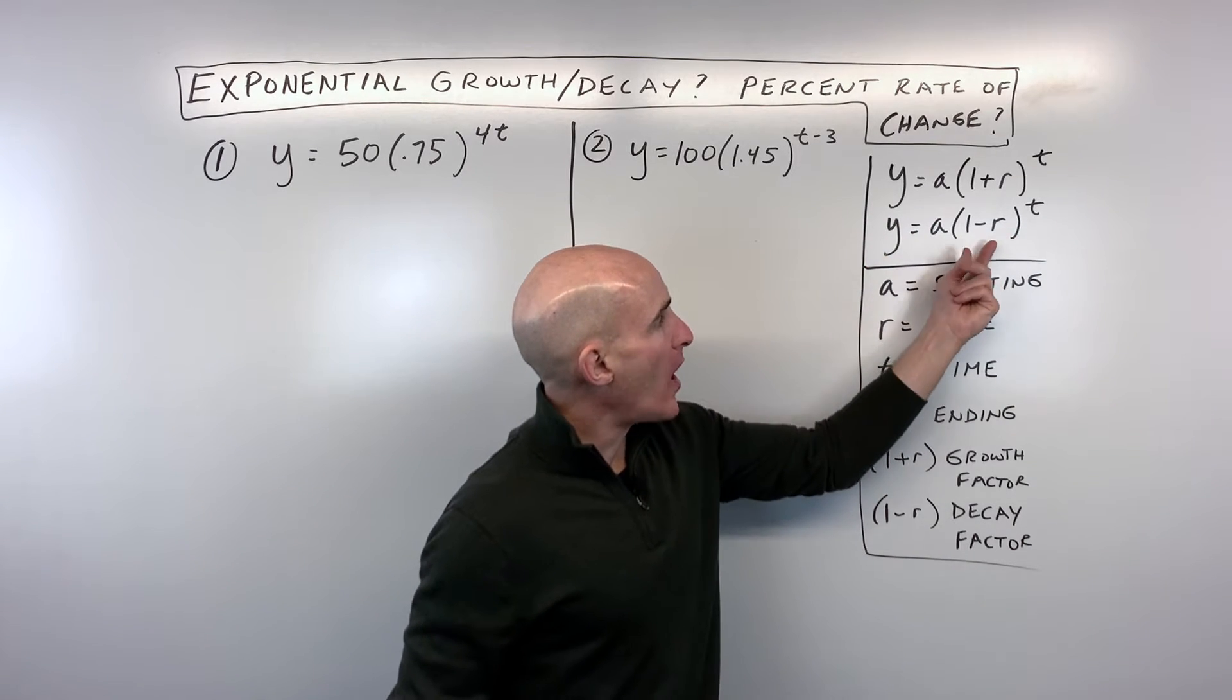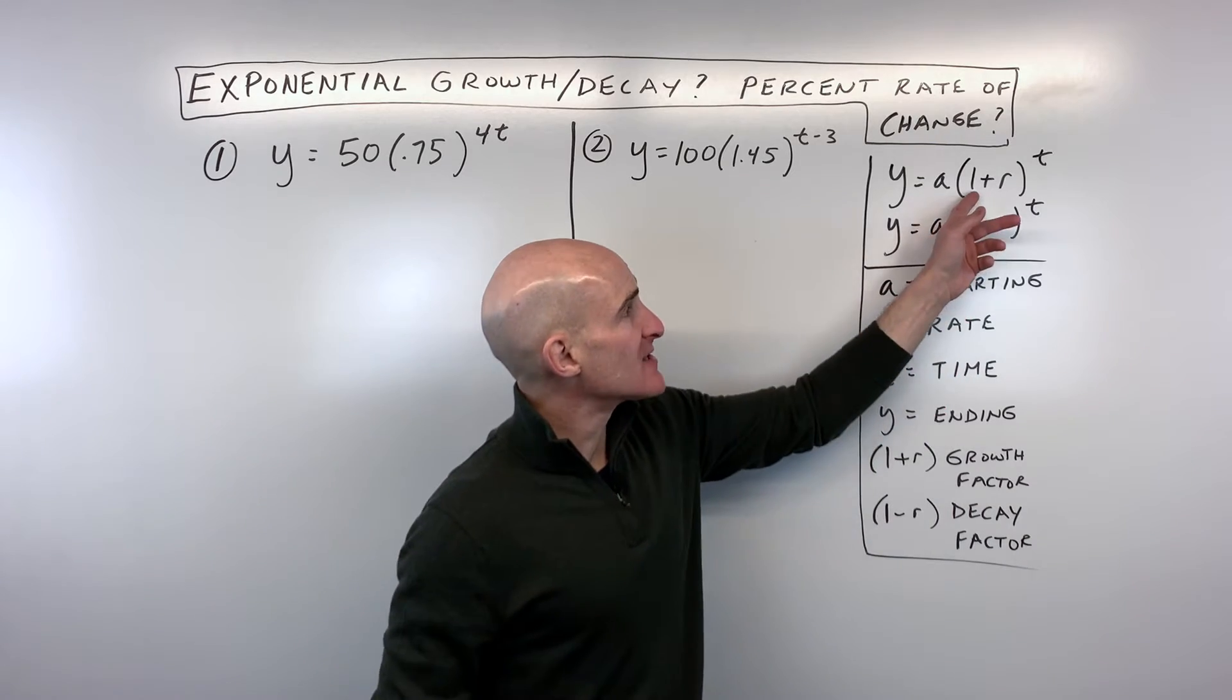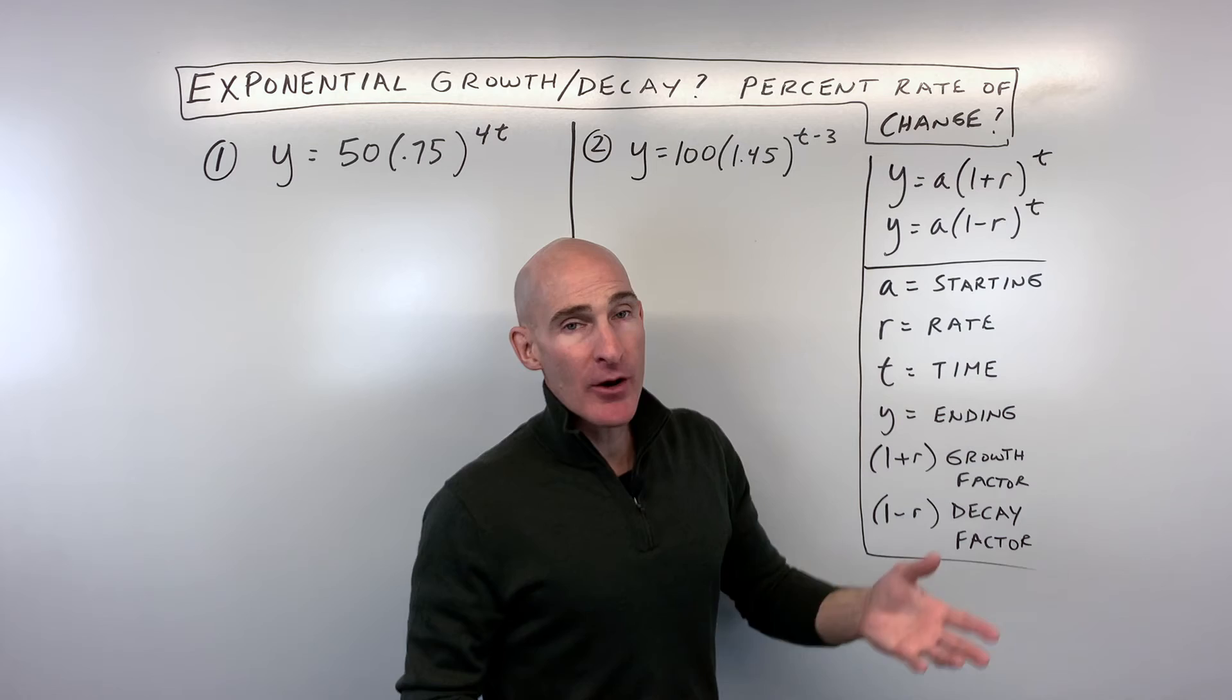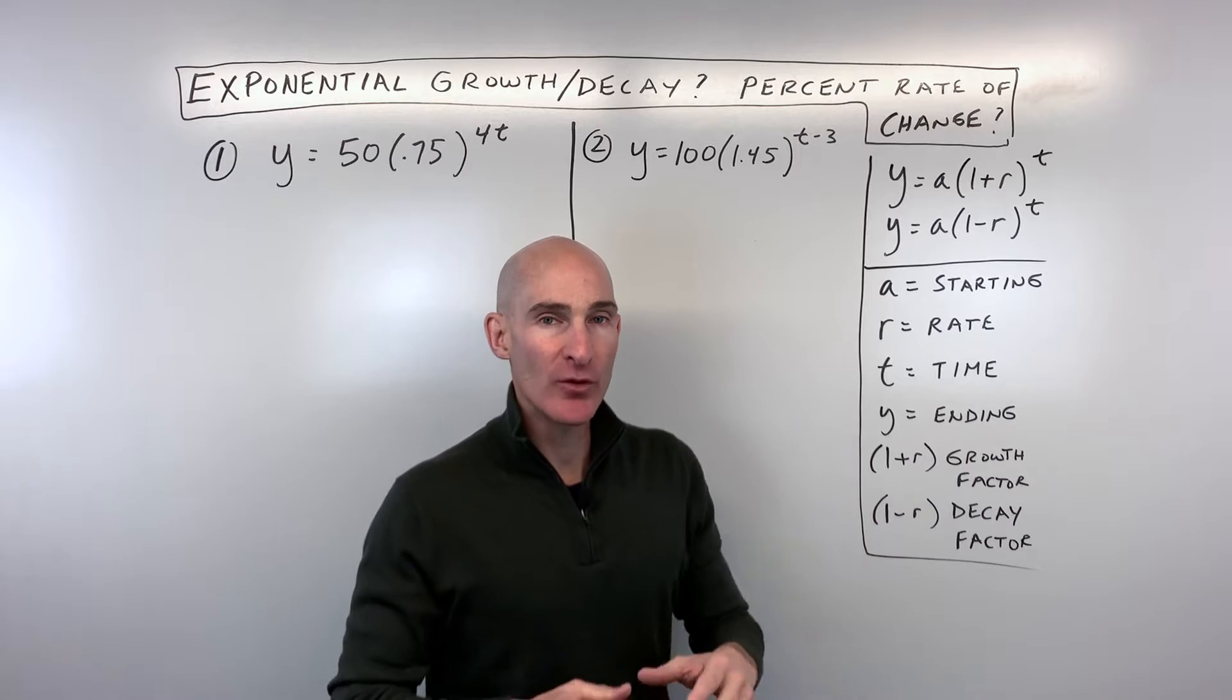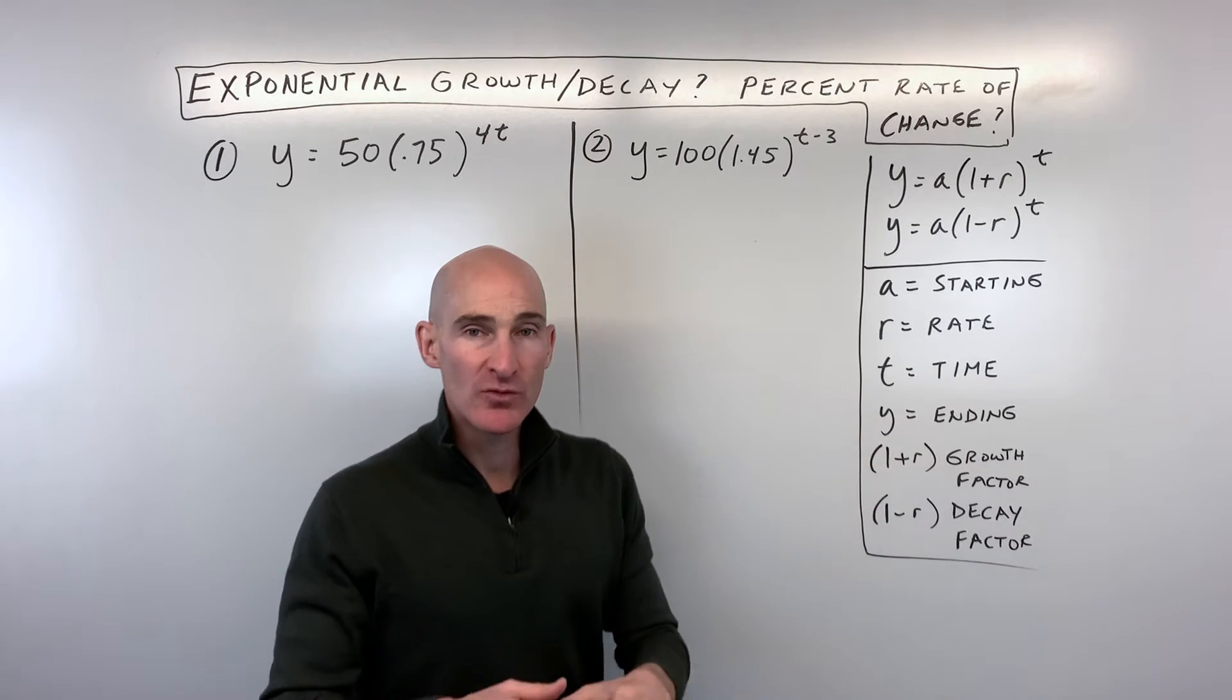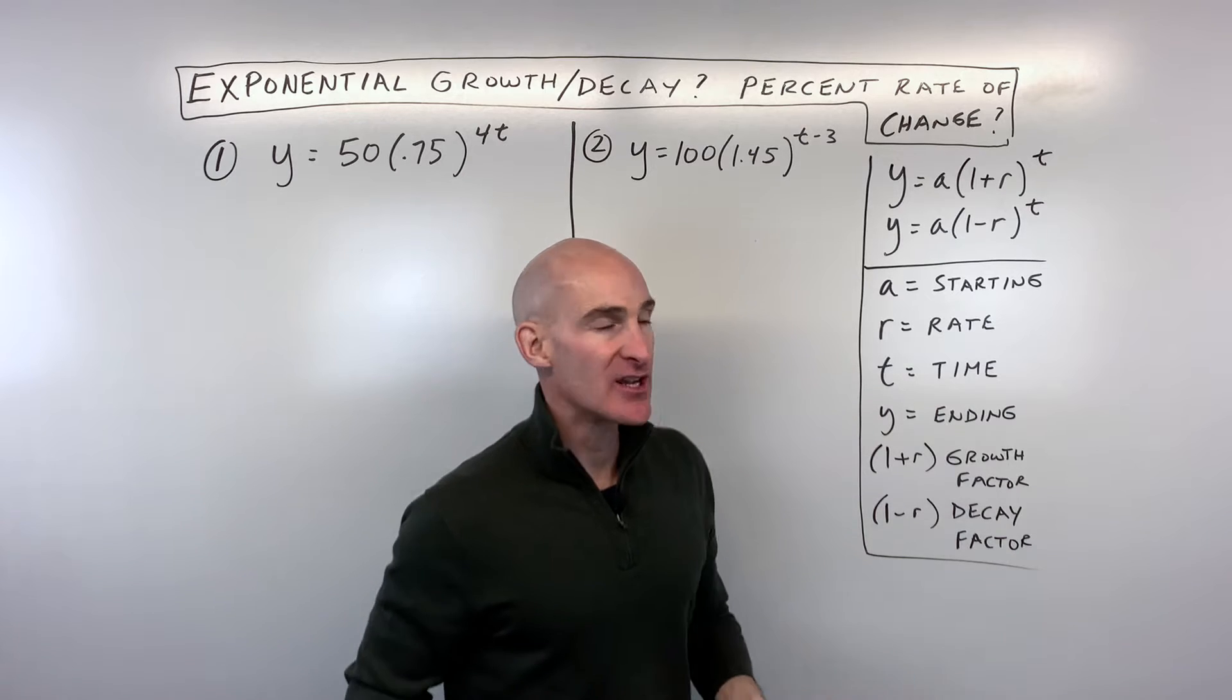Now, when you look at this whole quantity here, 1 minus r or 1 plus r, the 1 represents like 100%, like the original amount, and plus r means how much more than 100%, and 1 minus r, that r is going to be how much less than 100%, but the 1 is like the original amount. And when you think of that 1 plus r, that's the growth factor, so that's what you're multiplying by each time. 1 minus r is like your decay factor, which you're multiplying by each time.